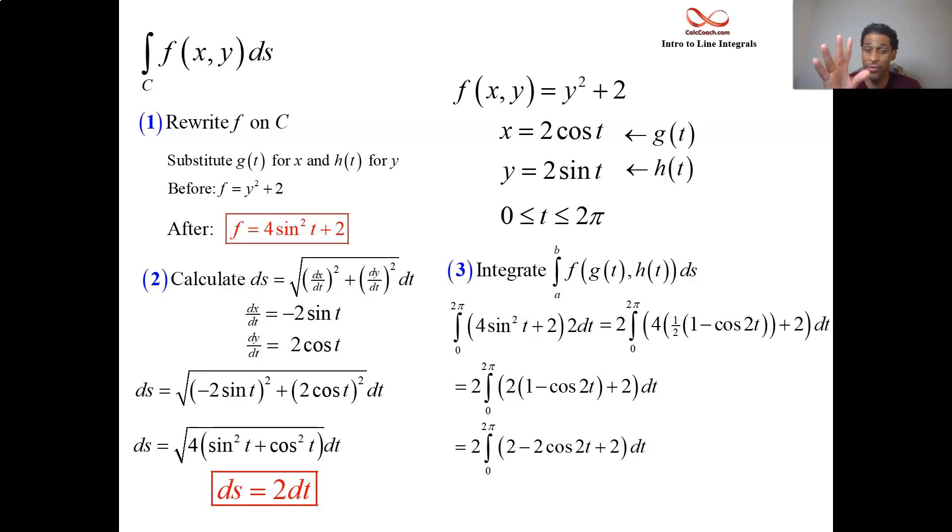Oh, the 2 comes from ds. I'm like, where's that other 2 coming from? The 2 comes from ds being twice dt. Okay, great.